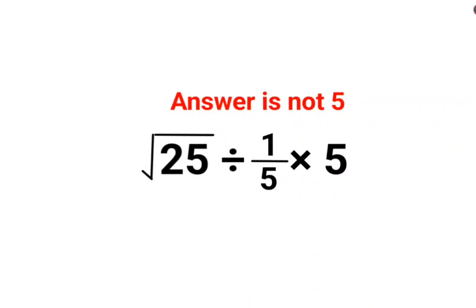Welcome everyone, today we are going to understand why the answer for this one is not supposed to be 5. This seems easy, right? 1 upon 5 multiplied by 5, this is canceling, so root of 25 divided by 1, and root of 25 is just 5. Yes, a lot of people made a mistake in